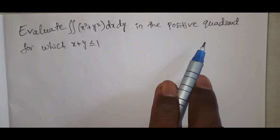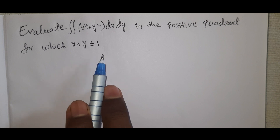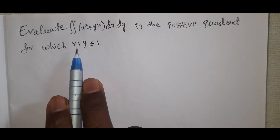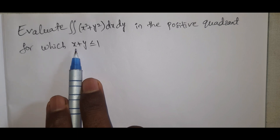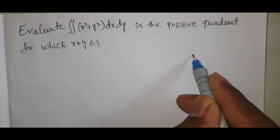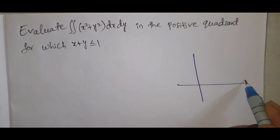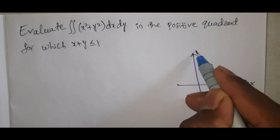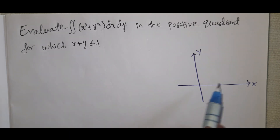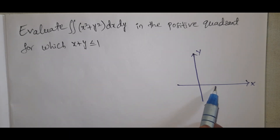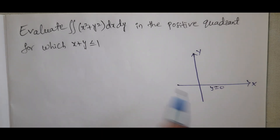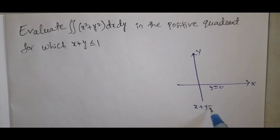The region is the positive quadrant for which x + y ≤ 1. This is an inequality equation where x + y ≤ 1. The boundary line is x + y = 1. Now we can draw it: on the x-axis, y = 0; on the y-axis, x = 0.